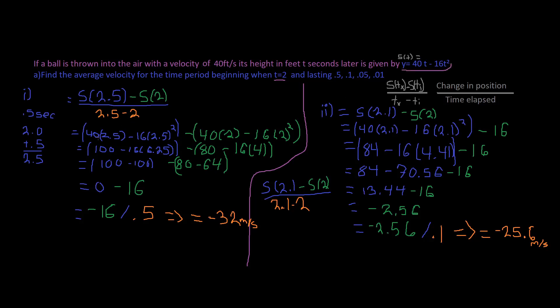So what happens here is 40 times 2.5 minus 16 times 2.5 squared. That's 80 minus 16 times 6.25, which is 80 minus 100, giving us negative 20. Then we have minus 16 times 4, which is 80 minus 64, which gives us negative 16. Divide that by 0.5, and that gives us negative 32 meters per second.